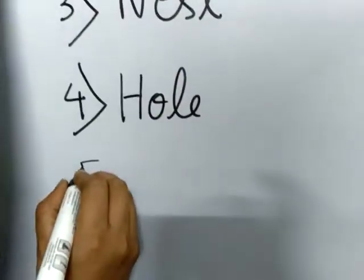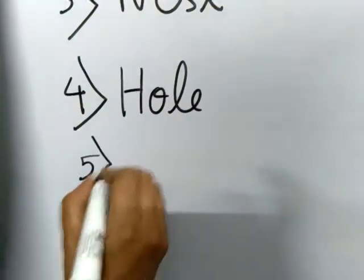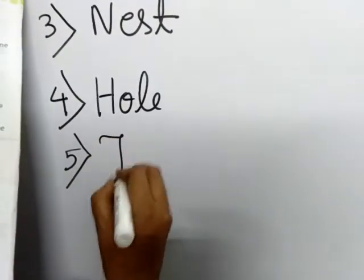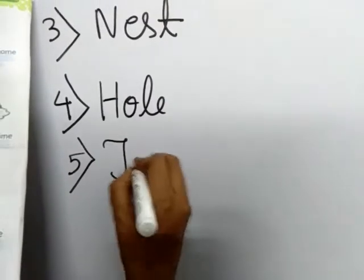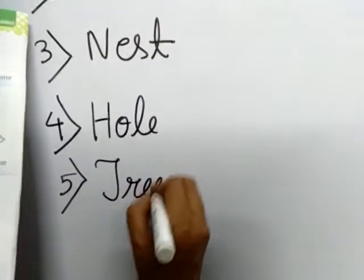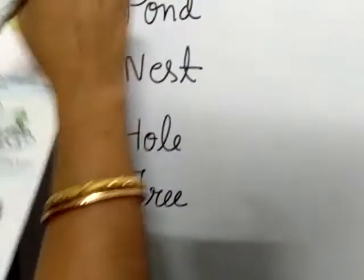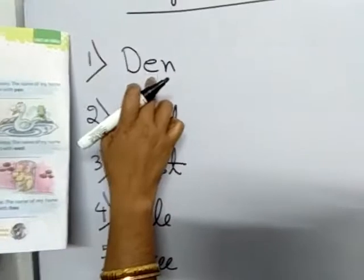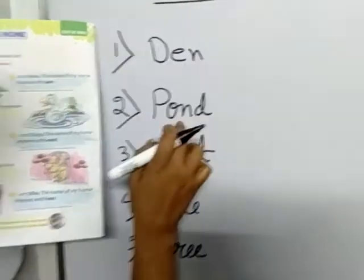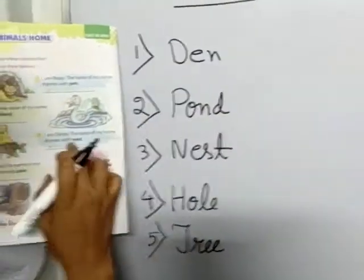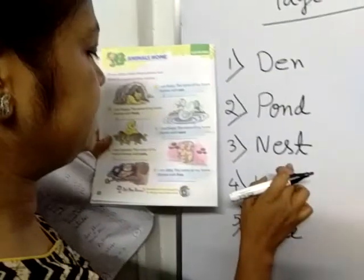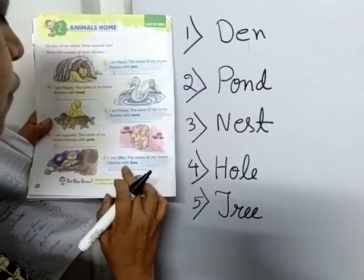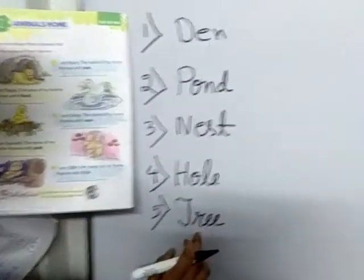Number 5: rhymes with free is tree, T-R-E-E, tree. So: pen → den, pond → pond, waste → nest, pole → hole, free → tree.